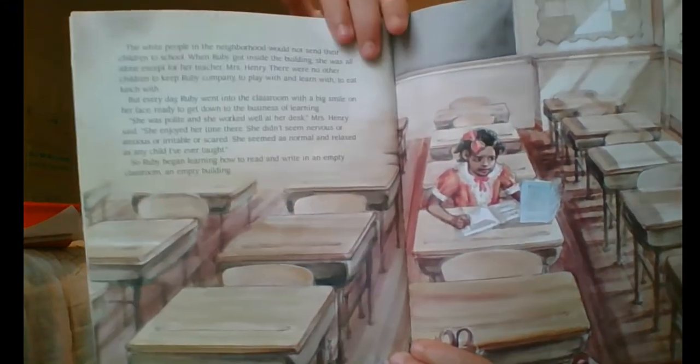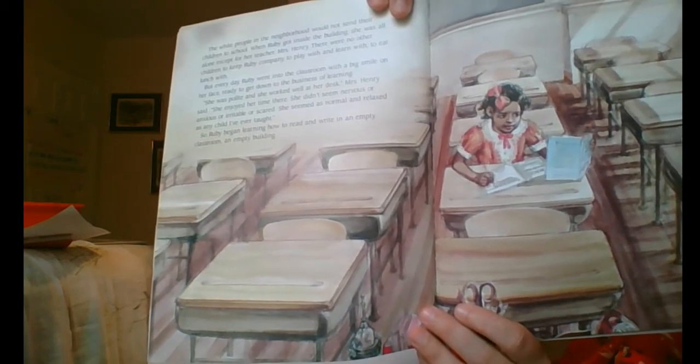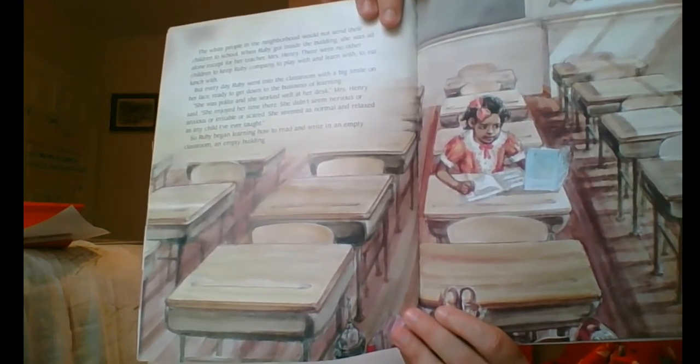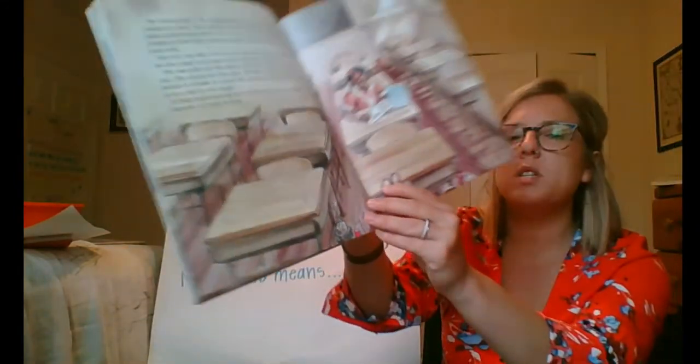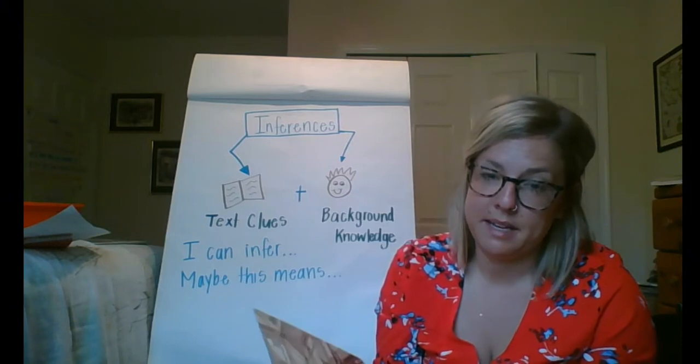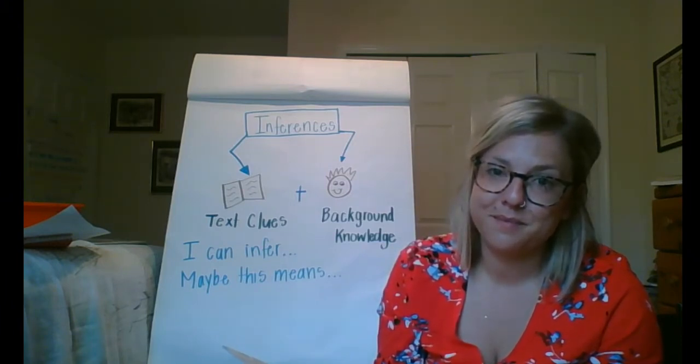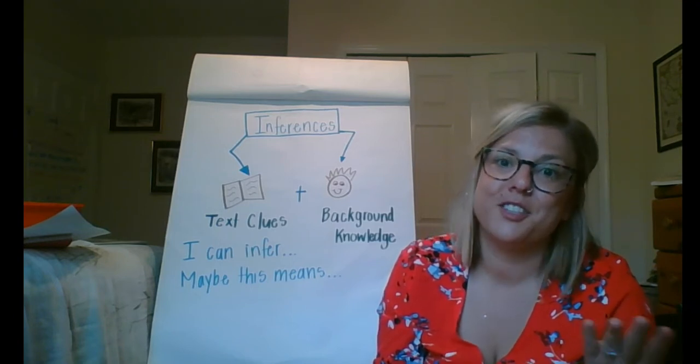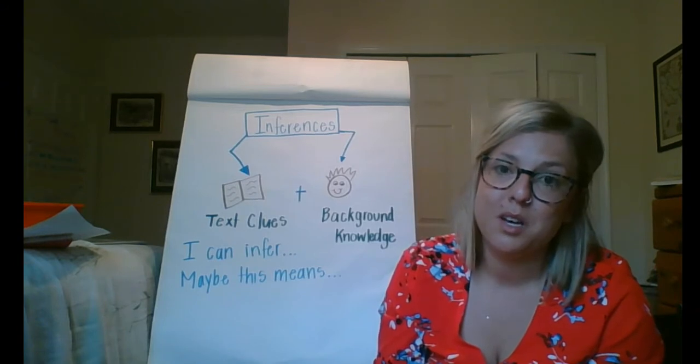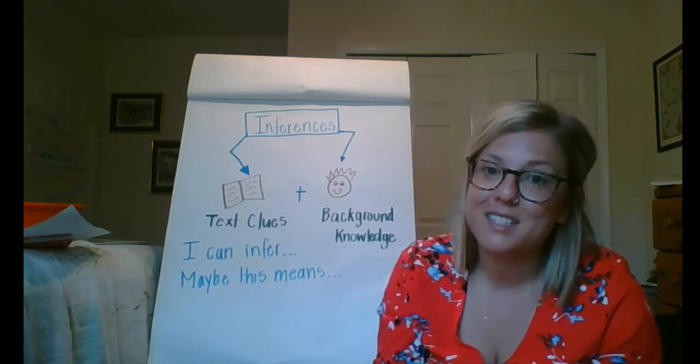Before we continue, I want you to make an inference now, and I want you to ask yourself, why do you think all of the desks are empty except for Ruby's? What's going on in our story right now to make you think why nobody would be in school with her? You're right. She's the first black student to come to the all-white school, so maybe the white families don't want her to be there. Let's find out.